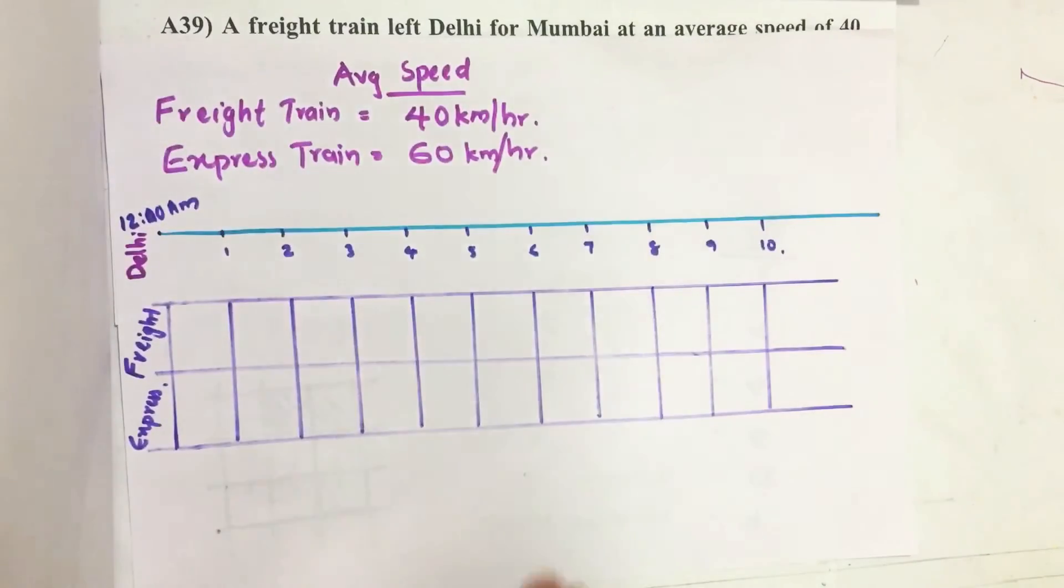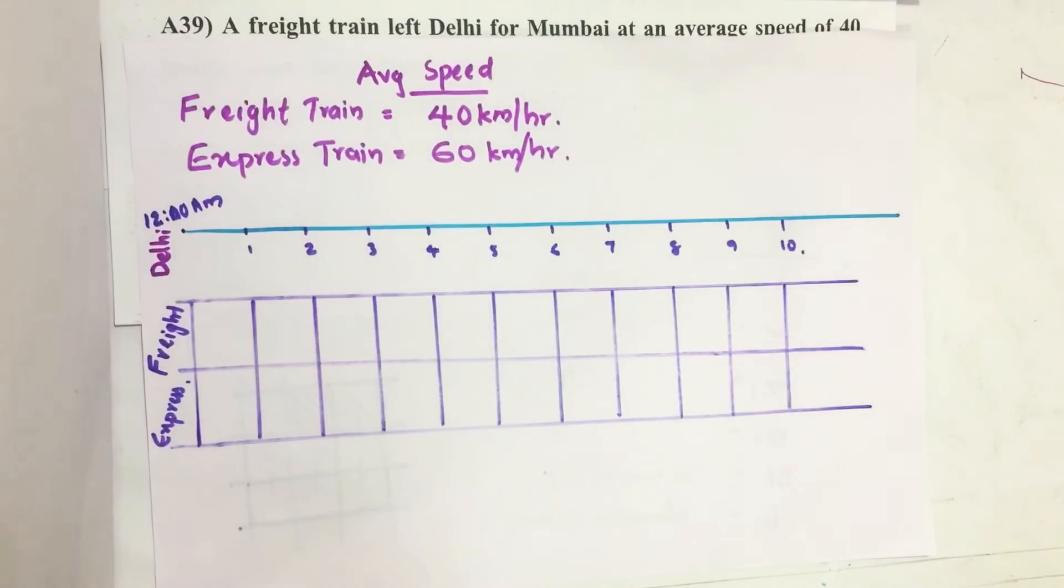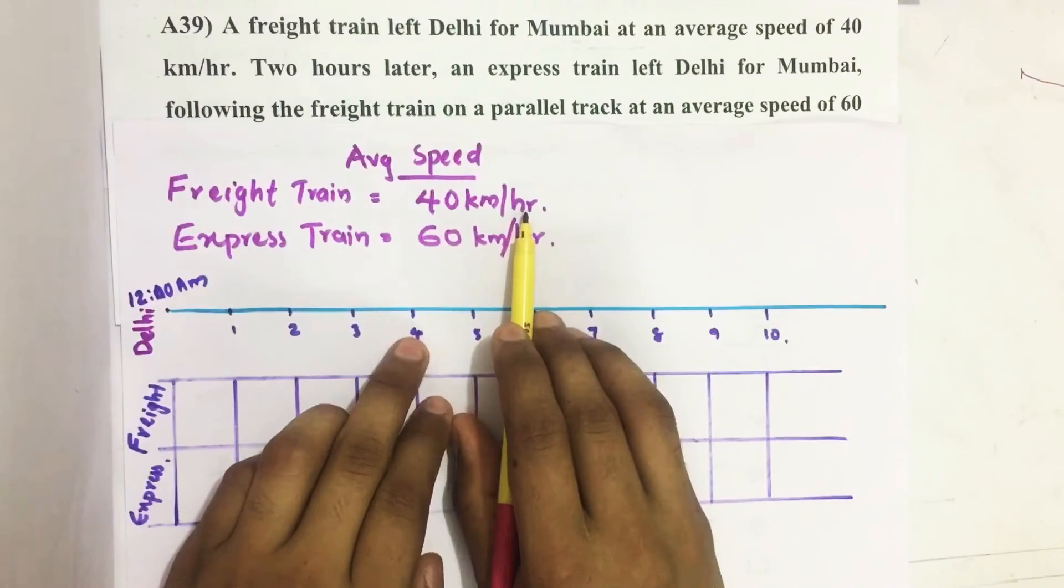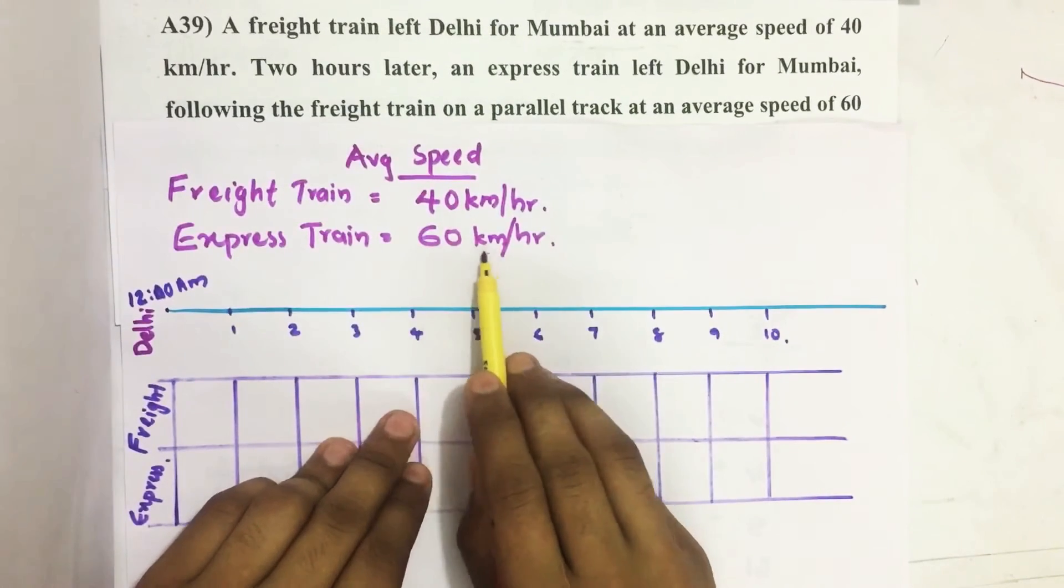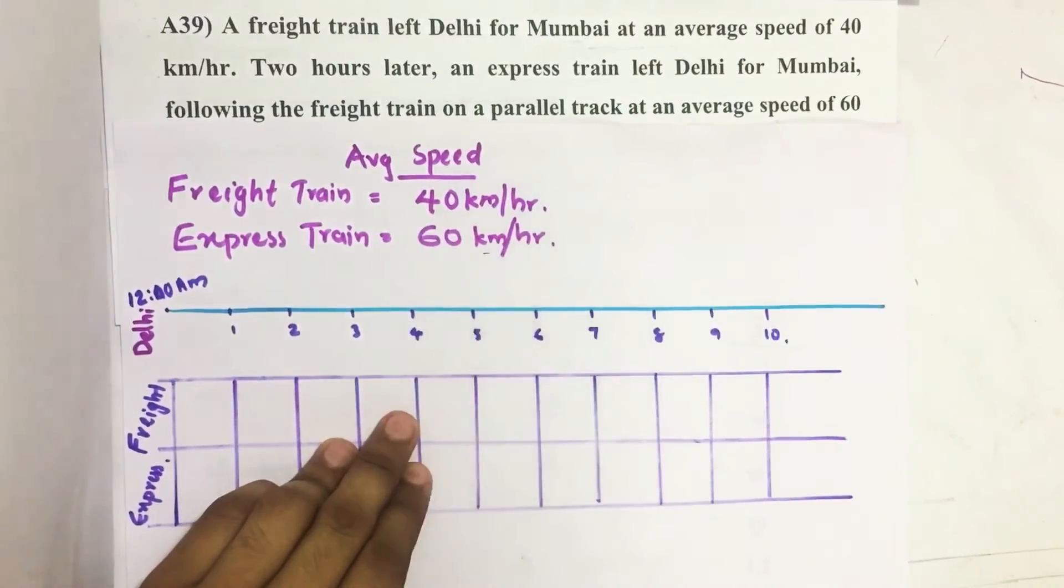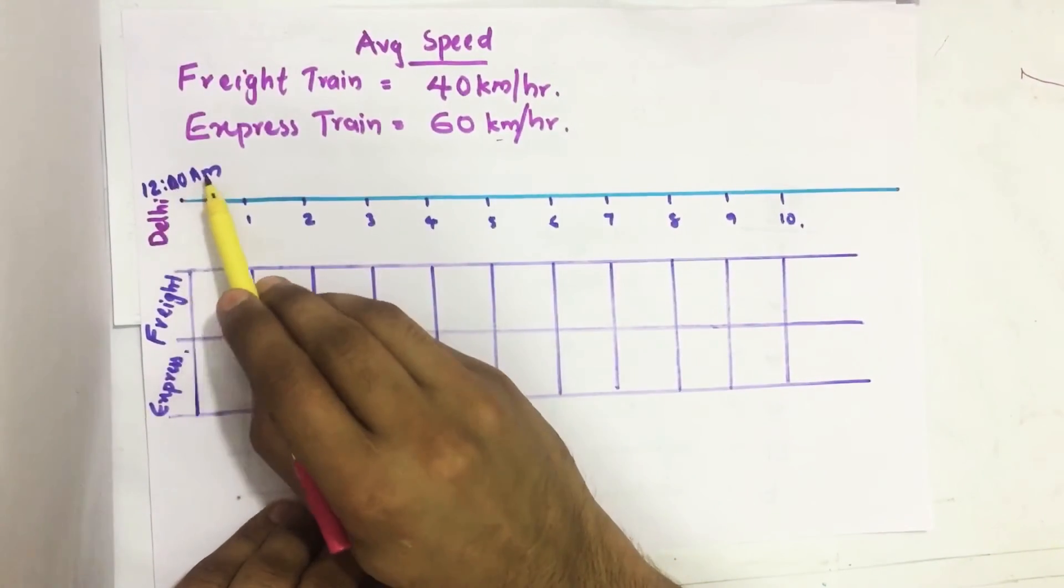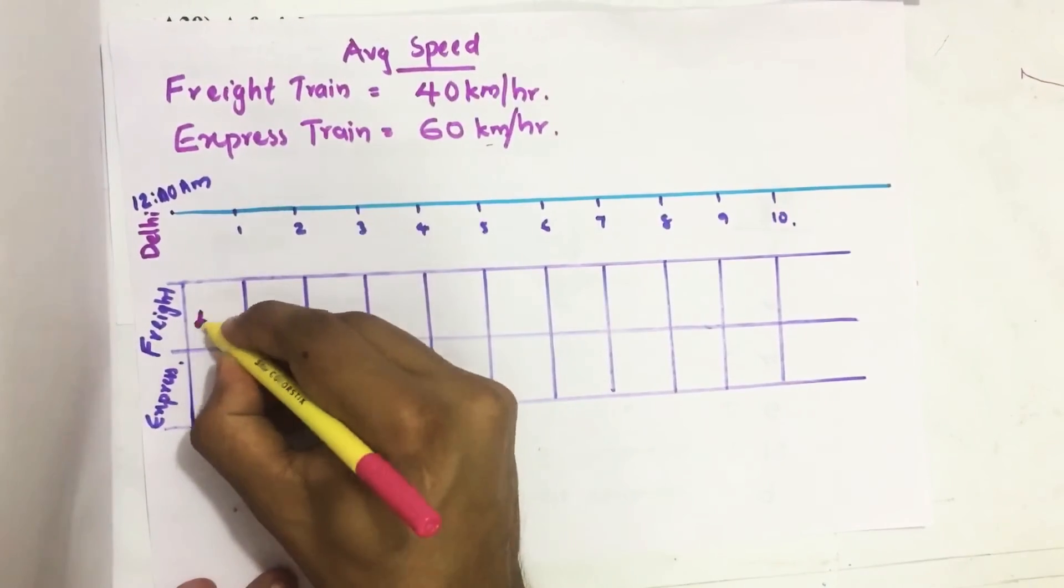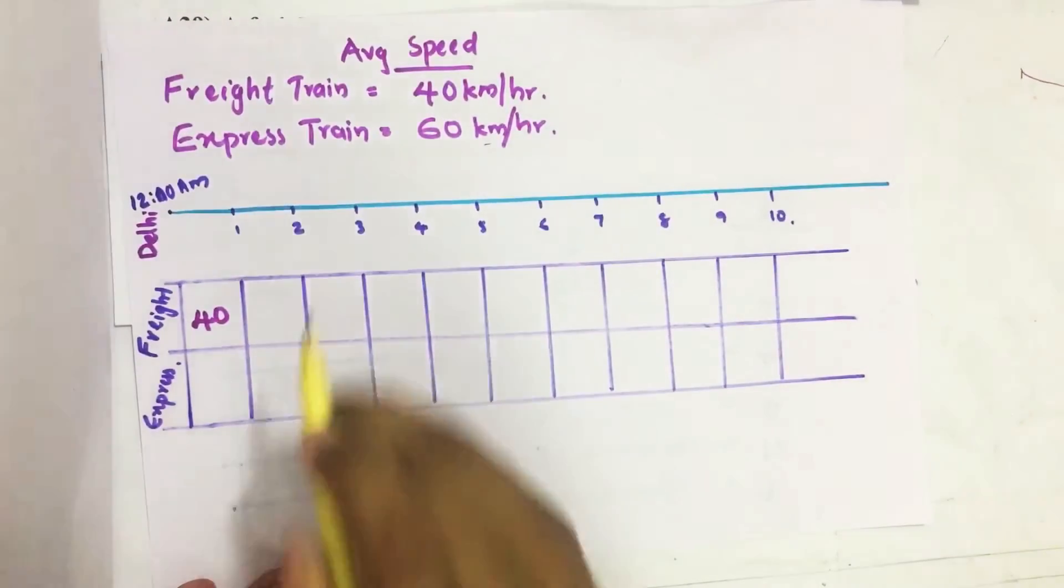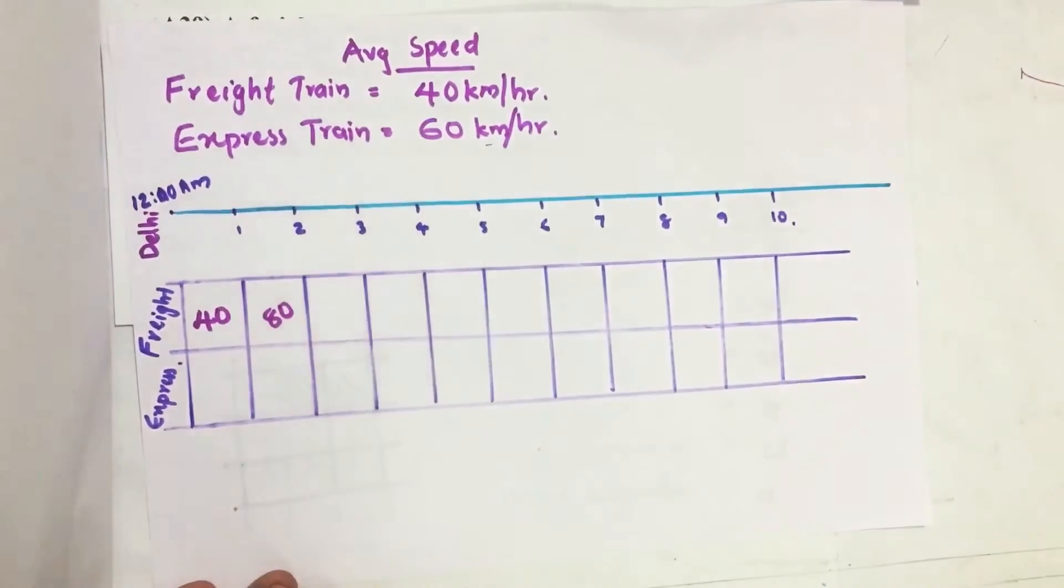So suppose the freight train starts from Delhi at 12 am. After one hour, what is the distance covered by the freight train? We know 40 km per hour means in one hour this train travels 40 km. Similarly, 60 km per hour means in one hour it can travel 60 km. So the freight train starts at 12 am, then at 1 am it travels 40 km, then after one more hour it travels 40 plus 40, 80 km.